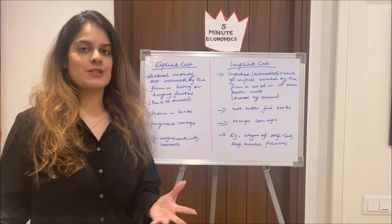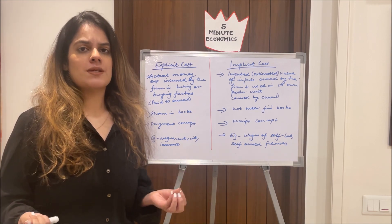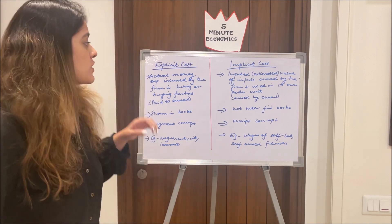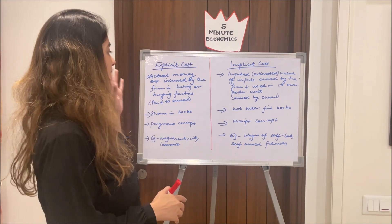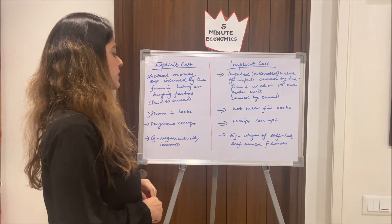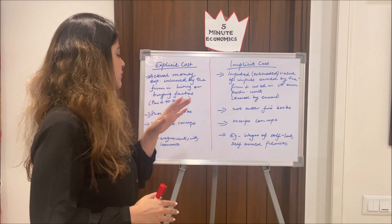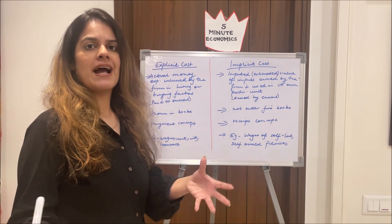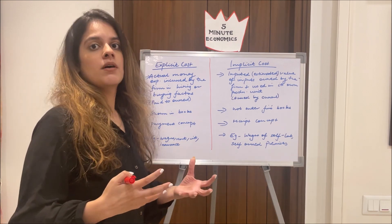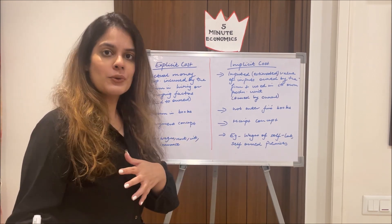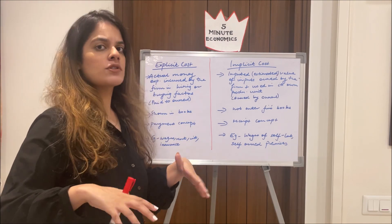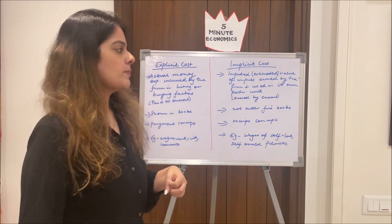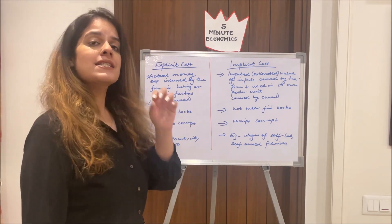I'm taking both of these concepts simultaneously because they are very similar yet very different. So what is explicit cost? By definition, it is the actual money expenditure incurred by the firm in hiring or buying the factors of production — basically paid to the owners. For example, if you are starting a firm and you are taking some land on rent, the rent money you are paying to the landowner is your explicit cost, because it's not owned by you.